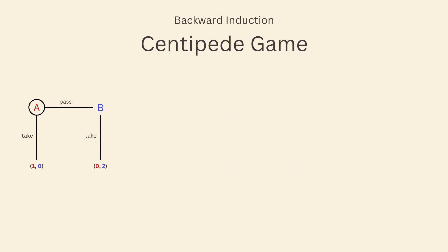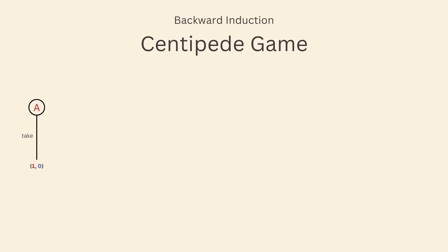We can continue this process until we reach the first round, where player A has to choose between taking 1 unit or passing and getting 0 units. Clearly, the optimal choice for player A is to take 1 unit and end the game. Therefore, we can eliminate the strategy of passing for player A in round 1.